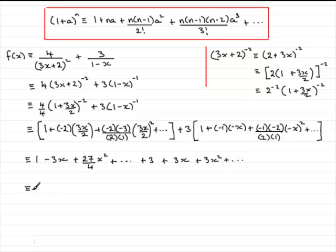So just group these terms together now. 1 and the 3 gives us the 4. Minus 3x and 3x, they cancel. And then you've got 27 quarters x squared plus 3x squared, and that comes out at plus 39 over 4x squared. And although we've been asked to write it up to the term in x squared, make sure you still put plus and so on on the end. Okay, well there you go. There's the binomial expansion for f of x.